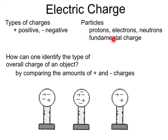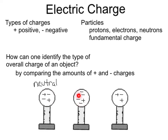Protons and electrons carry what's called the fundamental charge, which we'll see in another video. So how can one identify the type of overall charge of an object? Well, that's by comparing the amounts of positive and negative charges. If we look at this metal sphere on the left, we see it has two negative charges and two positive charges, and thus its overall charge is neutral. The sphere in the middle has four negative charges and two positive, making it overall negative. The last sphere on the right has two positive charges and one negative charge, so we would say it is positively charged. In class, you'll be challenged to sketch the charge distribution of an object and to determine whether it's neutral, negative, or positively charged.